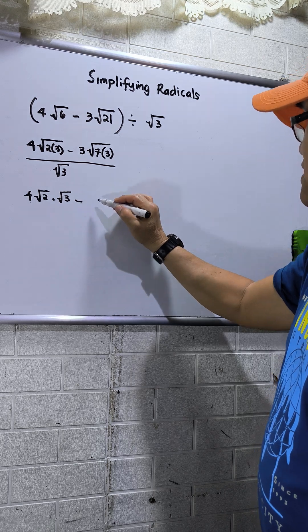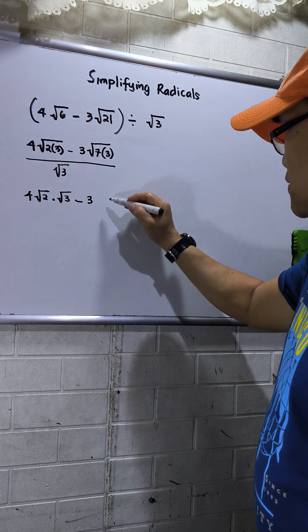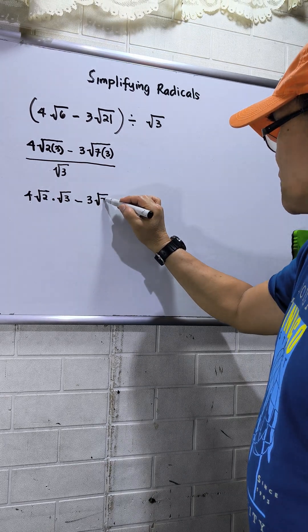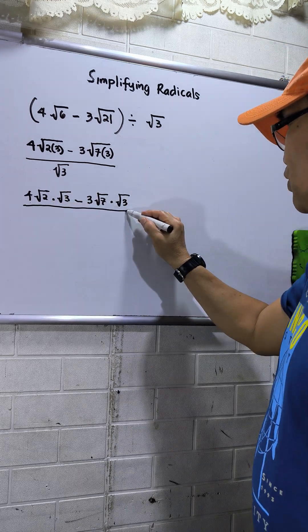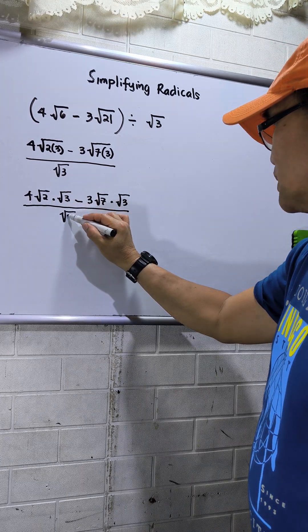Then minus 3. I will split the second one also. Square root of 7 times square root of 3. Then this will be over square root of 3.